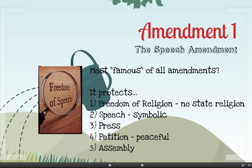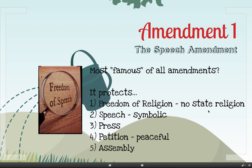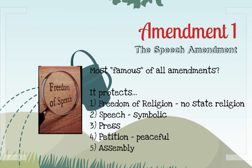First, Amendment 1 protects our freedom of religion. It says that you can worship whatever religion you choose, and also that the government can't push one religion as a state religion. That's why there are no prayers allowed in school, because school is a government organization. Second, the First Amendment protects your freedom of speech — both vocal speech and symbolic speech, like dress code or symbolism. It also protects your right to free press, to publish things in the newspaper that might be critical of the government.